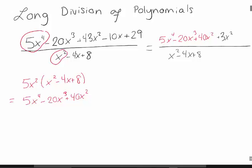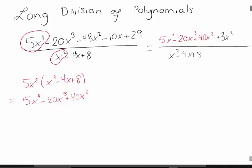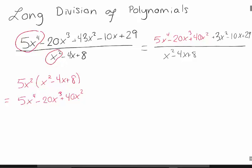Now we get to the x and constant terms, and I don't have any x's or constants here, so I need to add those in: minus 10x plus 29. Now I claim I haven't changed my fraction at all. If you simplify what's on the right, you should get what's on the left — that 40x squared plus 3x squared is going to give you 43x squared, for instance.